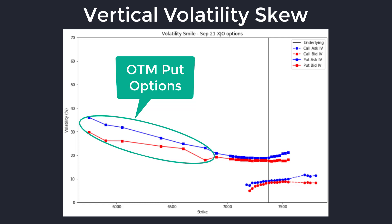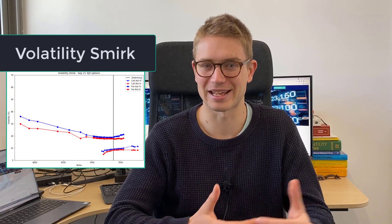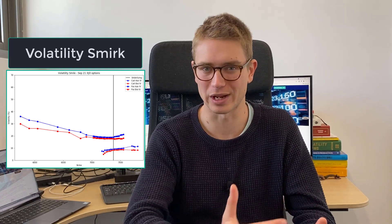For out-of-the-money put options, the implied volatility demanded from the market maker increases. That could be because it is harder to hedge those particular products, and because not a lot of competition is out there in the order book at those certain strikes. Therefore, the market maker is demanding a higher price for those products. This is what has created this volatility smirk — maybe not a smile, but a smirk. For out-of-the-money puts you see higher implied volatility, and as you come closer to at-the-money options, it really levels out.